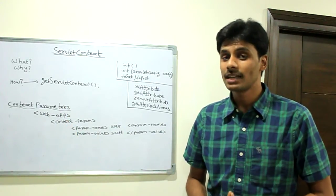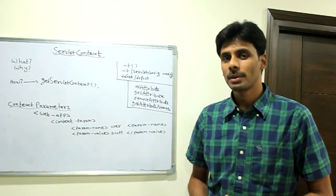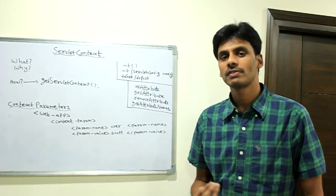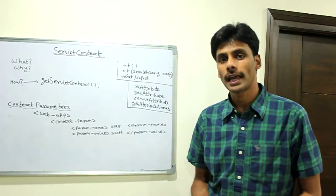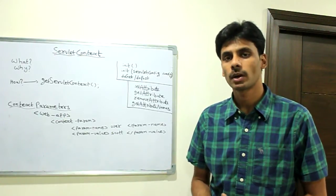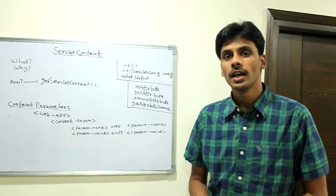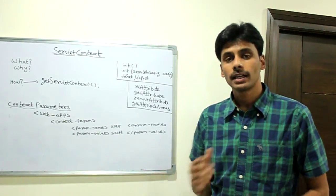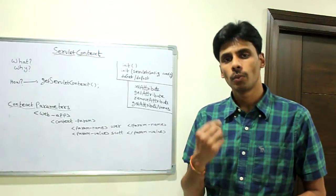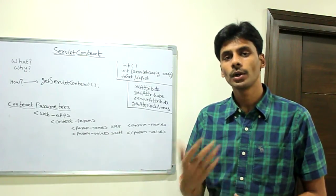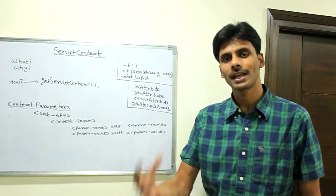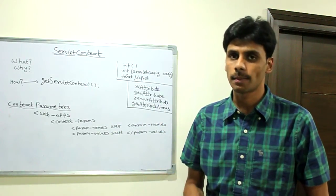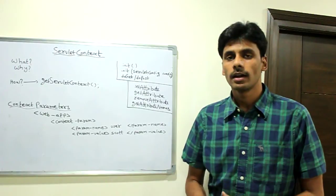ContextParameters, since you are familiar with initParameters, are fairly easy to understand. In case of initParameters, they were specific to a particular servlet. You were able to pass in the initParameters for a particular servlet by using the initParam element inside a servlet element of your web.xml. But those parameters were very specific to one particular servlet. If you want to initialize two or three servlets, you have to pass the initParameters again to those servlets from your web.xml and read them in the respective servlets.